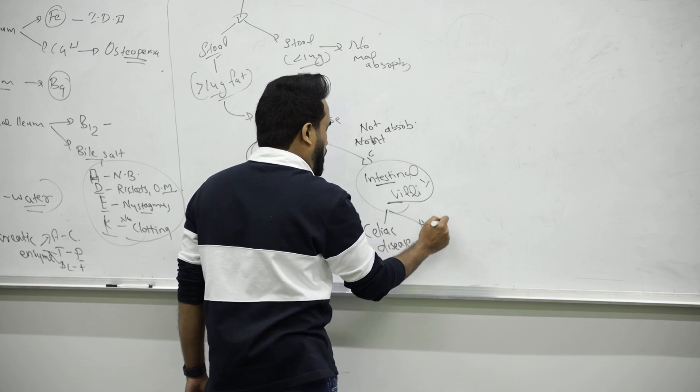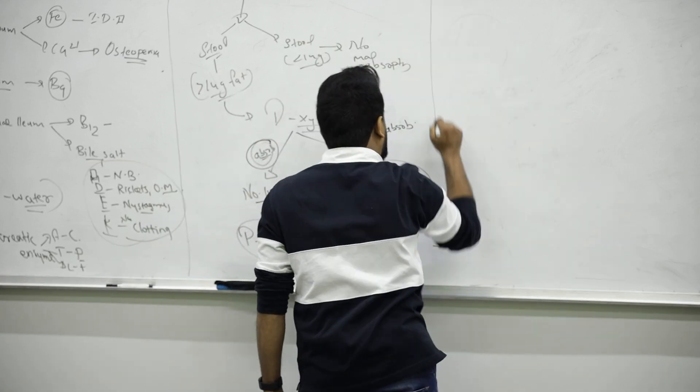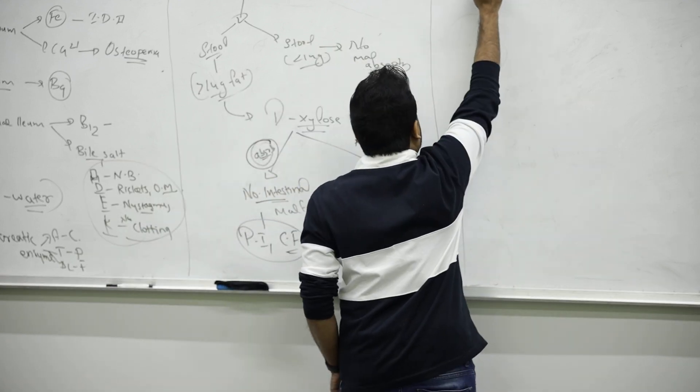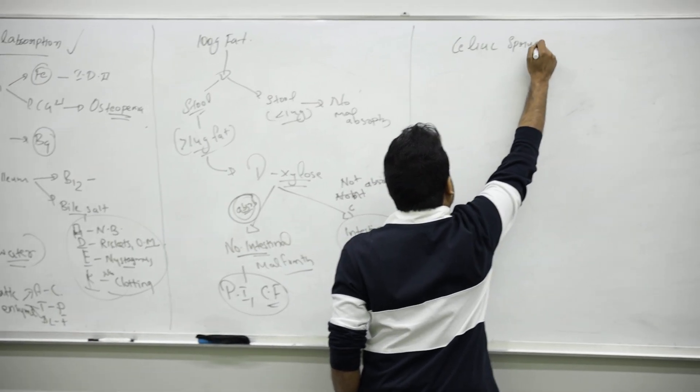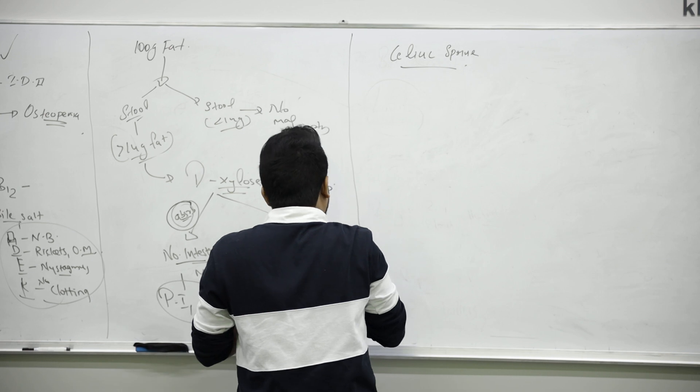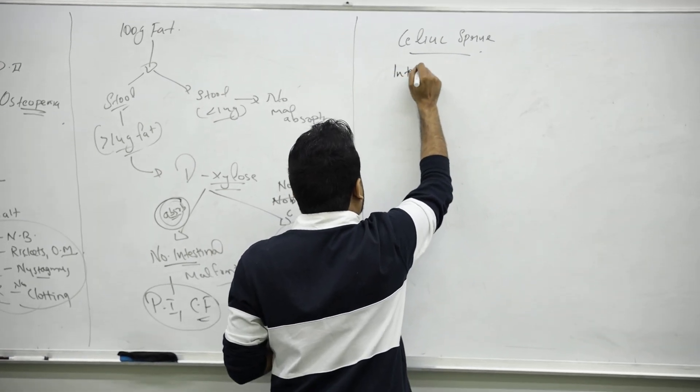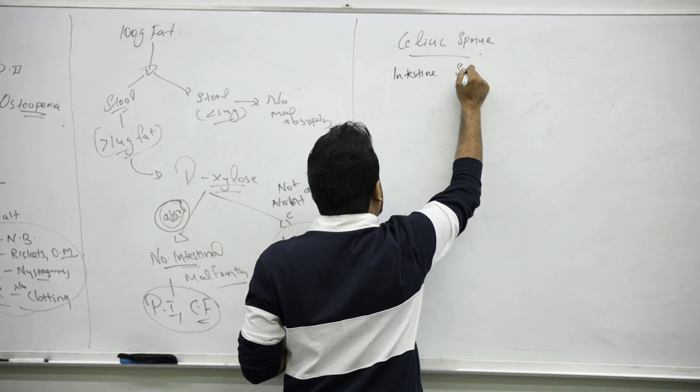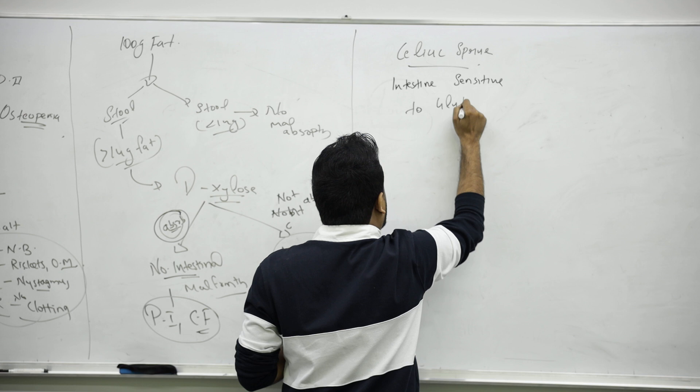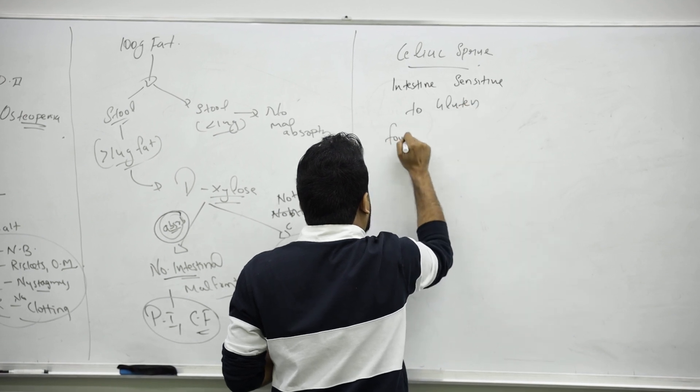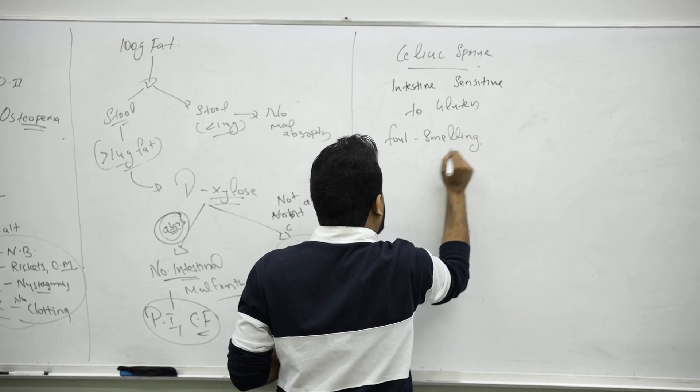What is celiac disease? Very important exam question everywhere. Celiac sprue. In celiac sprue, what is happening? The intestine becomes sensitive to gluten food, so they will have foul-smelling diarrhea.